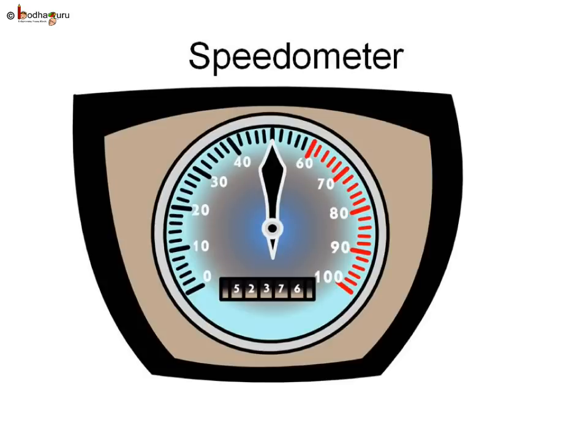You must be wondering how the driver of a vehicle knows at what speed he is driving. There is a device called a speedometer in all vehicles which indicates the instantaneous speed of the vehicle — that is, the speed of the vehicle at that instant of time. Here, the speedometer is indicating that the speed of the vehicle is right now 50 kilometers per hour.